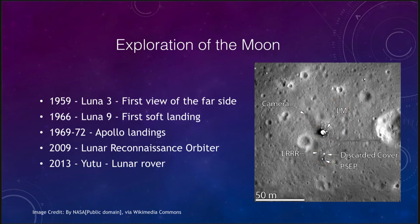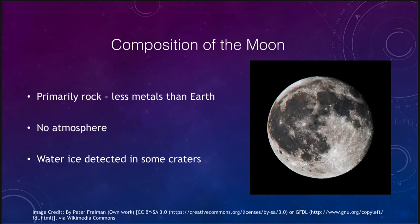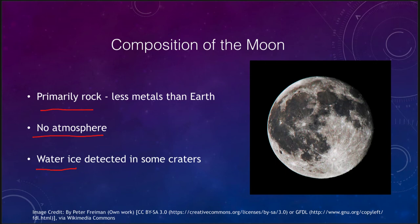The moon's composition is primarily rock, with less metal than the earth. It has no atmosphere to speak of, but water ice has been detected in some craters. Any water on the moon would be vaporized by the heat of the sun during the day, and the moon cannot hold on to water vapor. However, near the poles there are craters that are permanently shadowed, and water ice has been found in some of those.